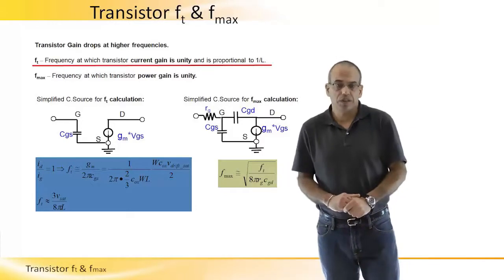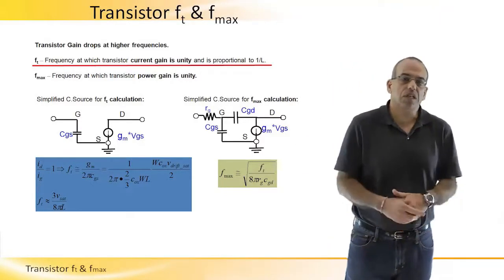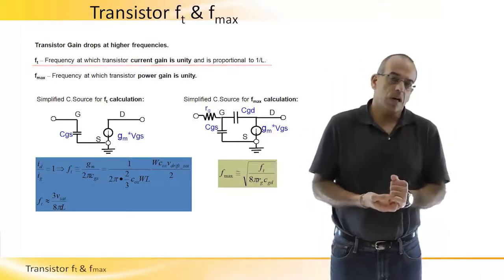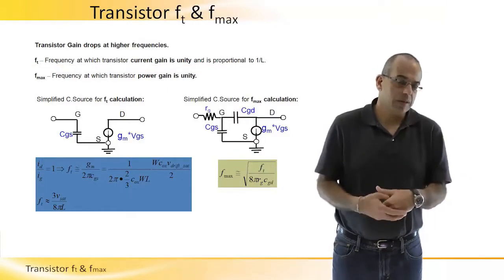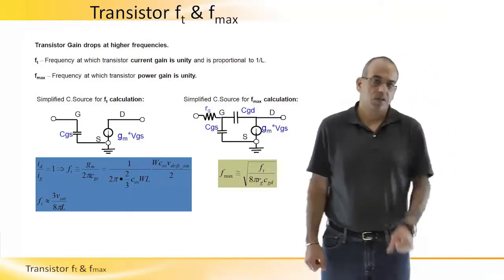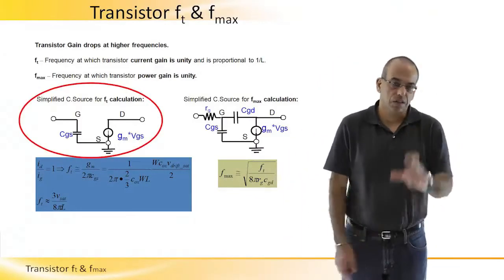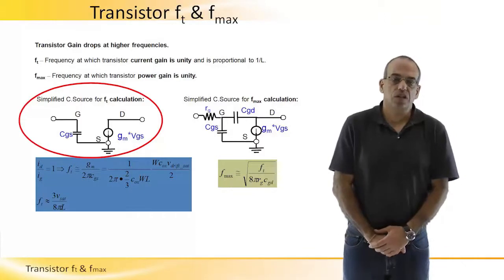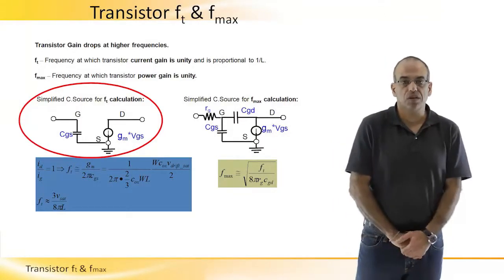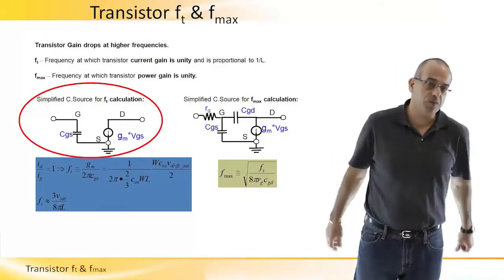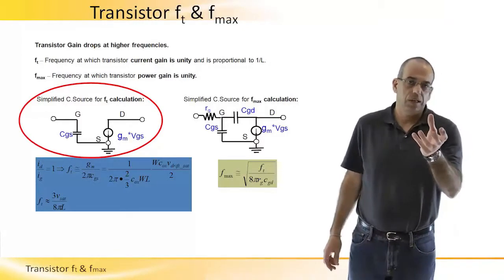When we look at the current gain of a transistor, we understand that the input current actually determines the VGS that develops on the CGS input capacitance to the transistor. This is a simplified model that is neglecting the RG and the CGD just to help us understand the Ft description.